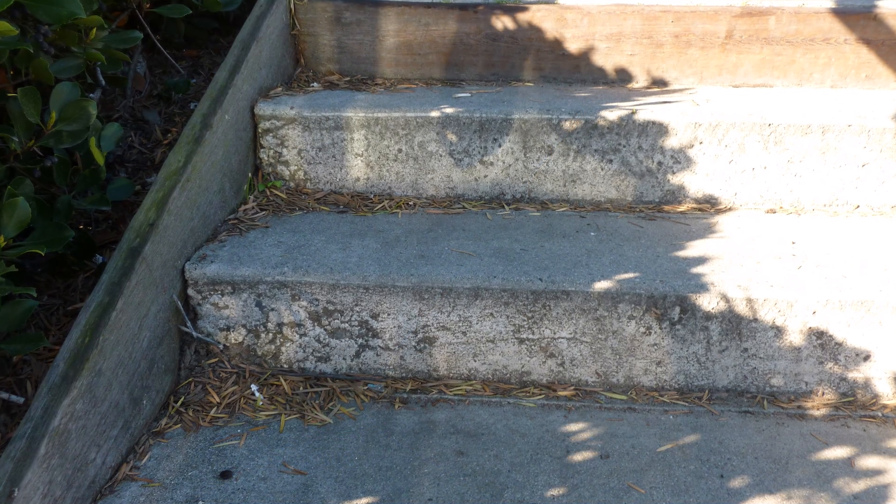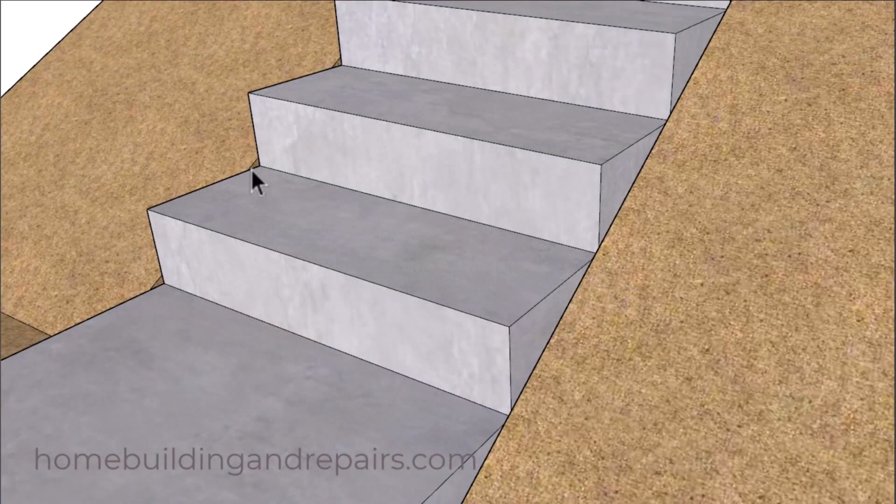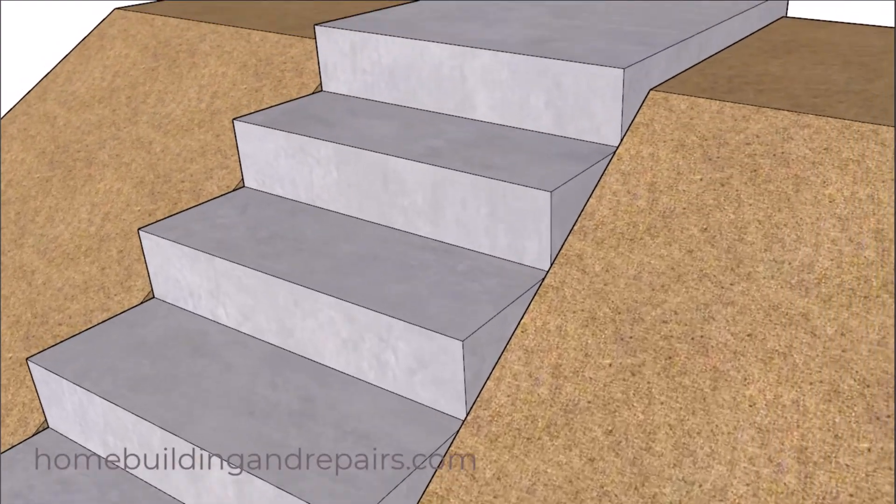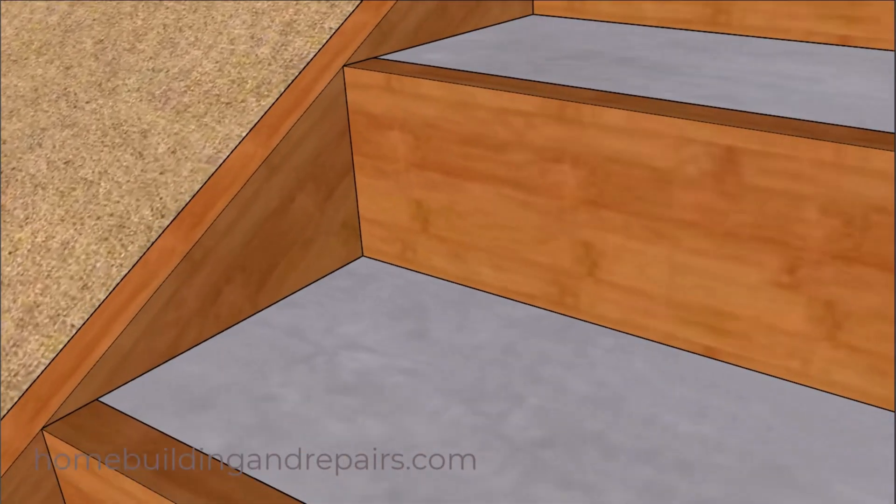And here's another thing you might want to consider. And that will be why some concrete stairs might have either a raised area at the back or a recessed area in the back here. And most of the time, it's going to be because the form boards weren't removed before the concrete was finished.